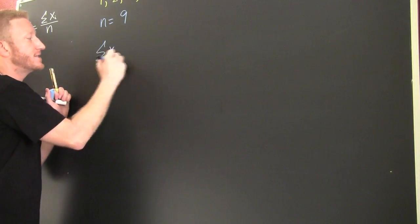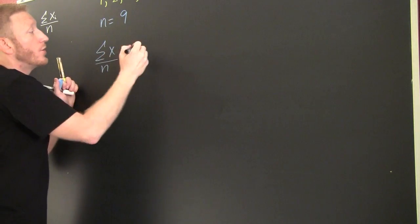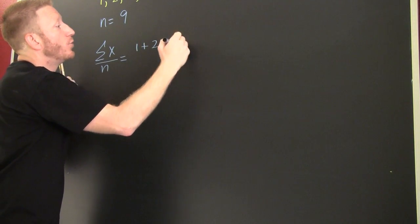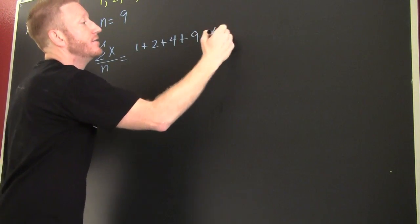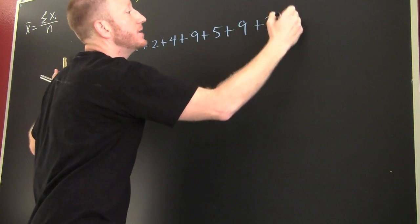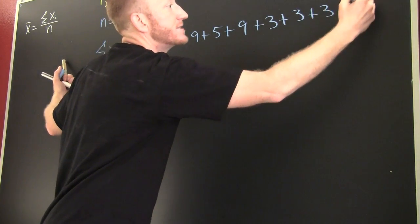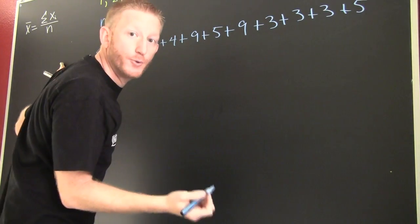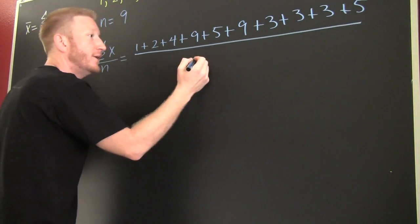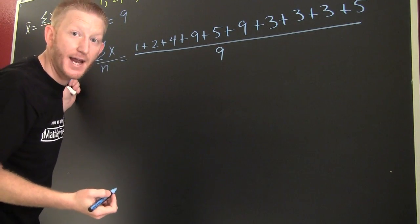That's the sum of all the x's divided by the number of x's. So I'm going to take one plus two plus four plus nine plus five plus nine plus three plus three plus three plus five, and then divide it by nine — because that's the number of numbers I had.